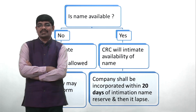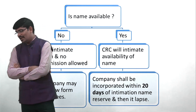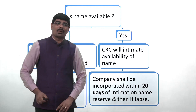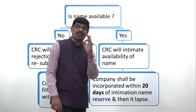From the date of intimation, the name is reserved for 20 days. Within those 20 days you must complete the company formation process, because if not completed within 20 days, on the 21st day the name lapses. After lapsing, if no one else has applied, it may again become available to you, but you will have to follow the name reservation process again.